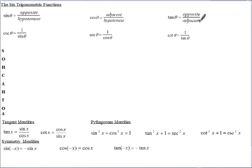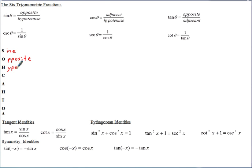An easy way to remember those is the acronym SOHCAHTOA, where S stands for sine — the O stands for opposite over the H for hypotenuse. I wrote it vertically here so you can see it's actually over it. So sine is opposite over hypotenuse.